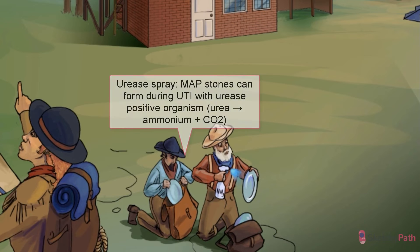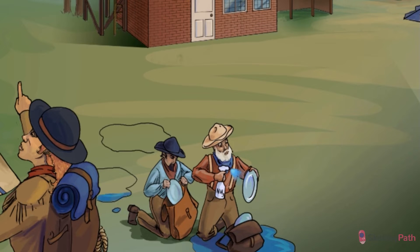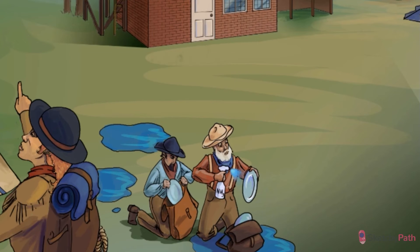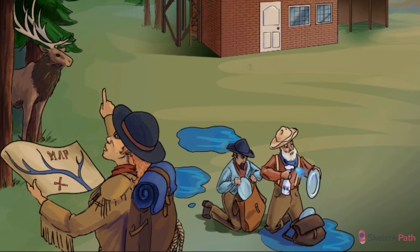The P stands for phosphate. Normally, phosphate is highly soluble in the urine. However, once a urease-positive organism adds ammonium to the mix, the pH of the urine increases, which drastically reduces the solubility of phosphate. Just think of that pH in phosphate. In this scene, a basic pH is depicted with these blue ammonium puddles. Later on, we'll contrast this with a more yellowy, acidic environment on the right. For now, blue equals basic.